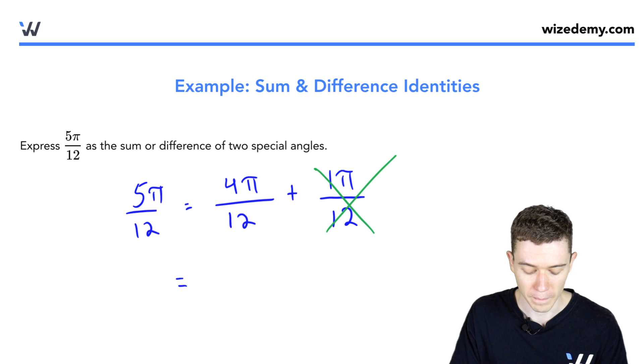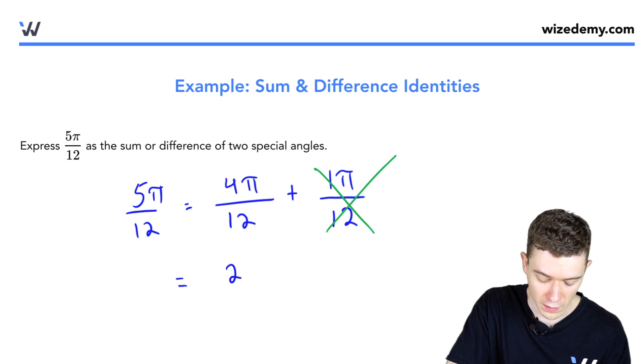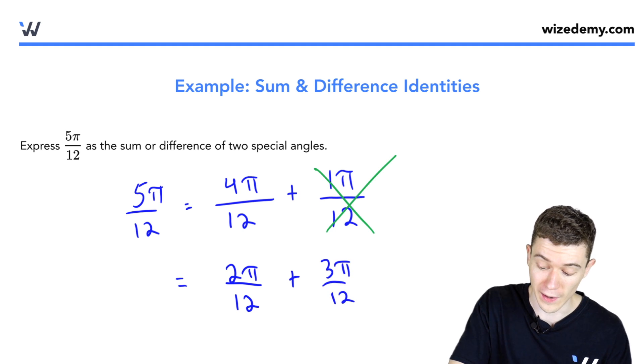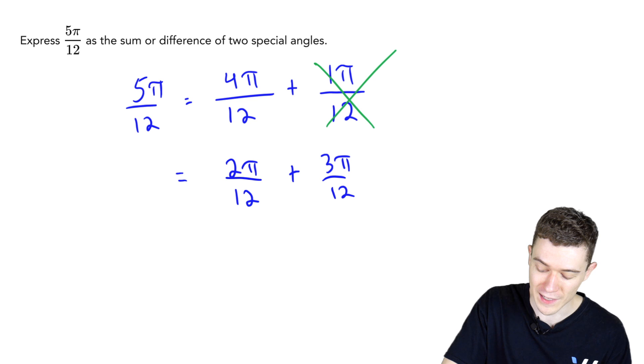What's a different way? Well, a different way to split up 5 could be 2 plus 3. 2π/12 plus 3π/12. Ah, this might work because these angles reduce.